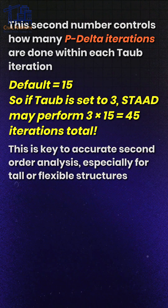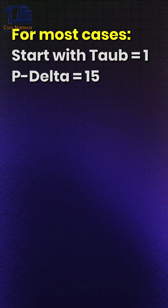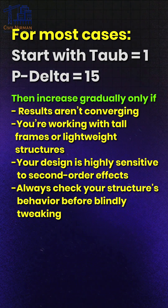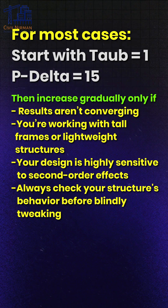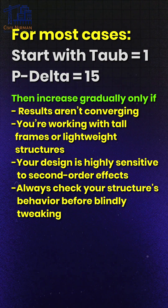For most cases, start with tau-b as 1 and P-delta as 15, then increase these numbers gradually only if the results aren't converging, you are working with tall frames or lightweight structures, or your design is highly sensitive to second-order effects. Always check your structure's behavior before blindly clicking.